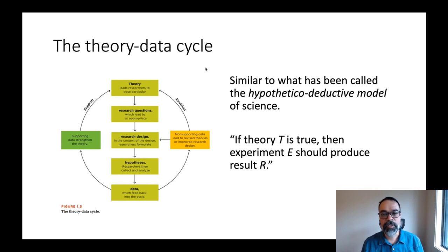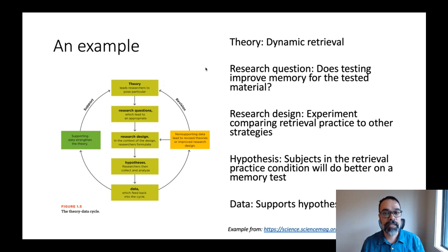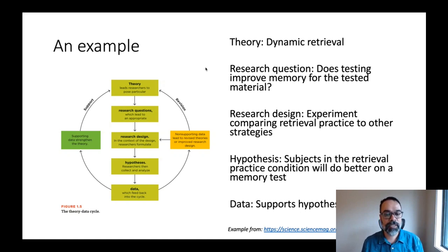Let me walk through a specific example to make this more concrete. One theory from the science of learning and memory is dynamic retrieval — a theory about how retrieval of memory, meaning calling something from your memory back into consciousness, isn't just like pulling a book from a library and putting it back unchanged. It suggests that the act of retrieval actually changes the memory. From this theory, one question is: if remembering something changes the memory, are there circumstances where you can improve someone's memory?